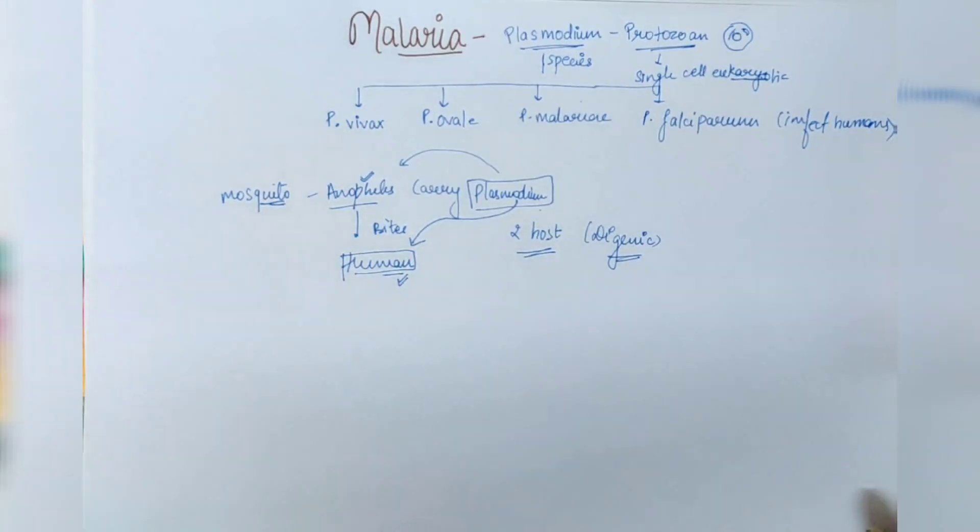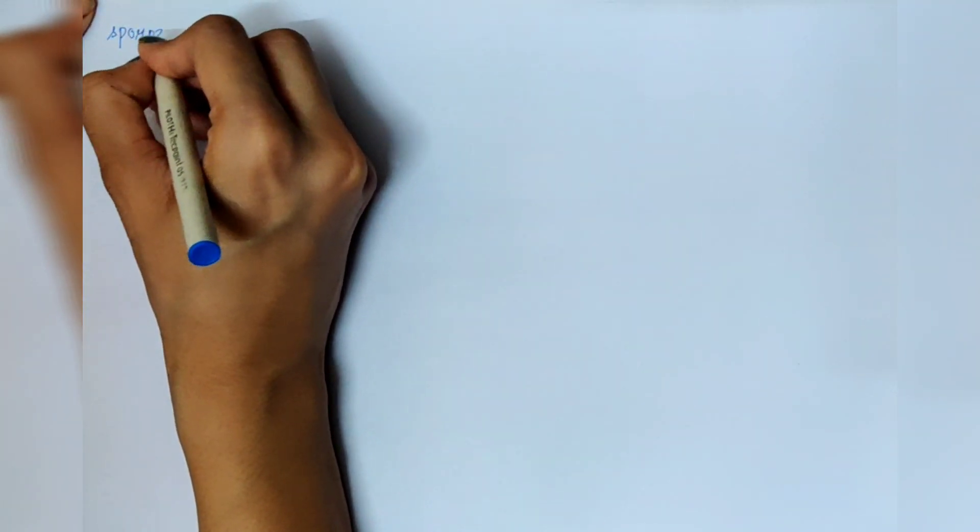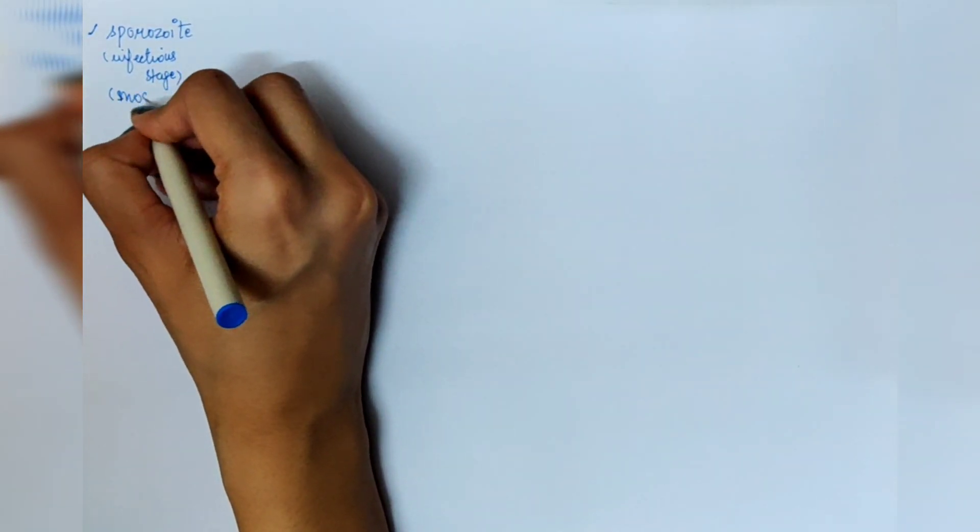Now proceeding to the life cycle of plasmodium. We start with the sporozoite. The sporozoite is the infectious stage — it is the stage that can infect humans. The sporozoite stage is present in the mosquito's salivary gland. When the mosquito bites a human and sucks blood, some saliva is injected, and with this saliva, sporozoites also enter into humans.